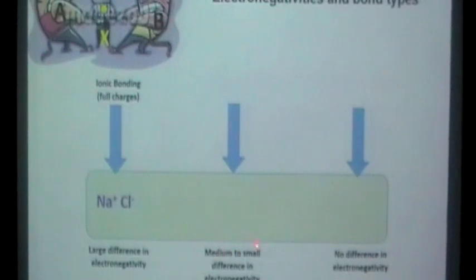When you've got a medium to small difference in electronegativity then you would get polar covalent bonding with these partial charges, these delta pluses and delta minuses. So an example of that would be HCl.